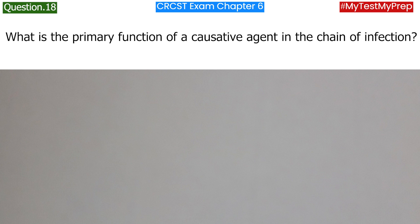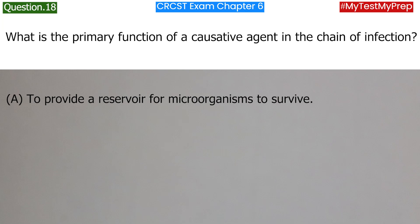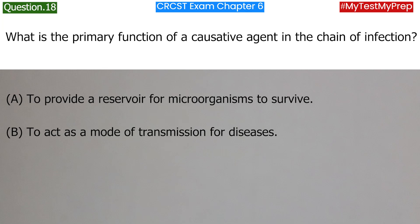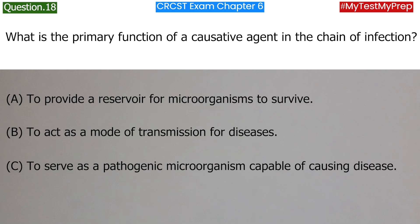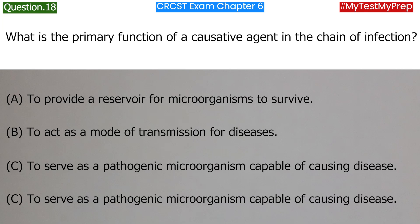What is the primary function of a causative agent in the chain of infection? A. To provide a reservoir for microorganisms to survive. B. To act as a mode of transmission for diseases. C. To serve as a pathogenic microorganism capable of causing disease. D. To prevent the spread of infections in healthcare settings. Answer: C. To serve as a pathogenic microorganism capable of causing disease.